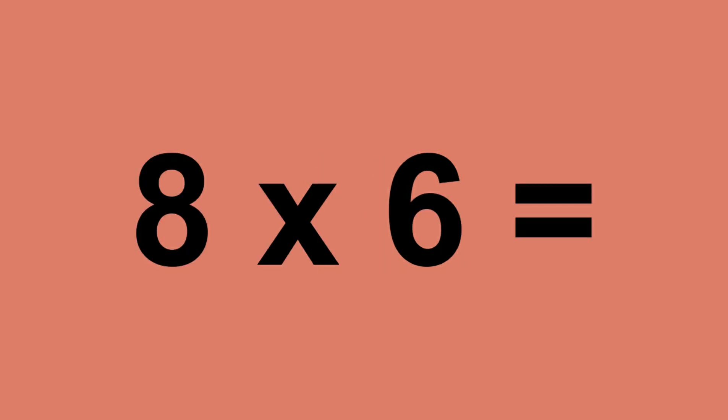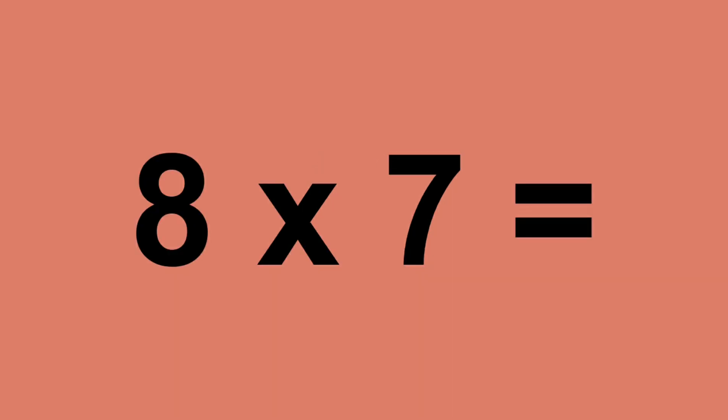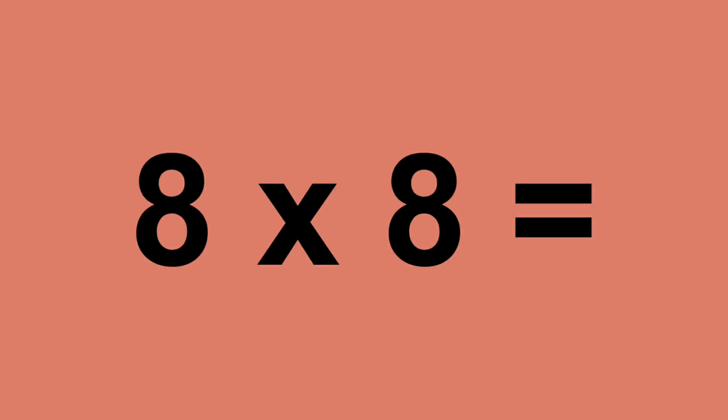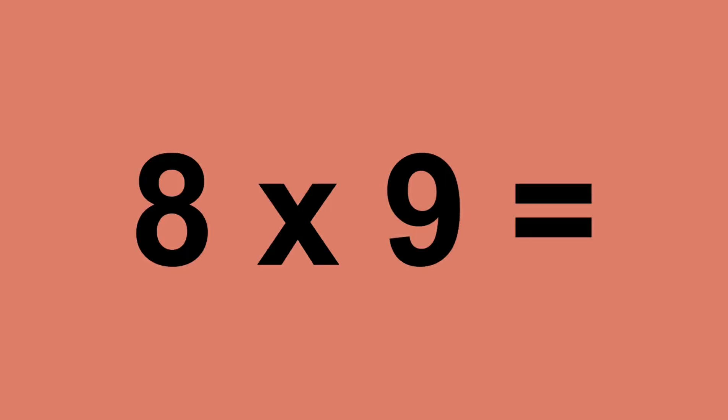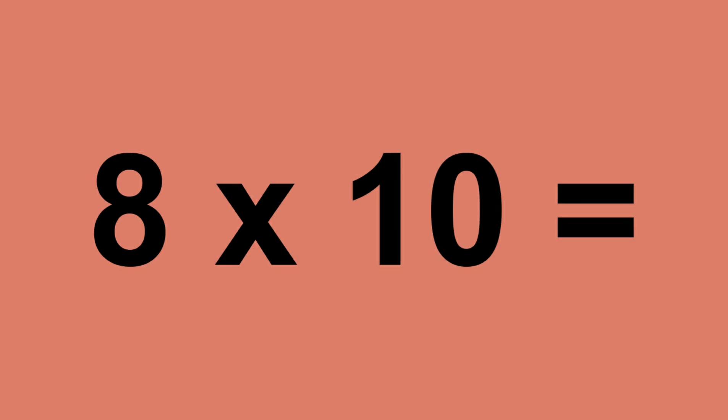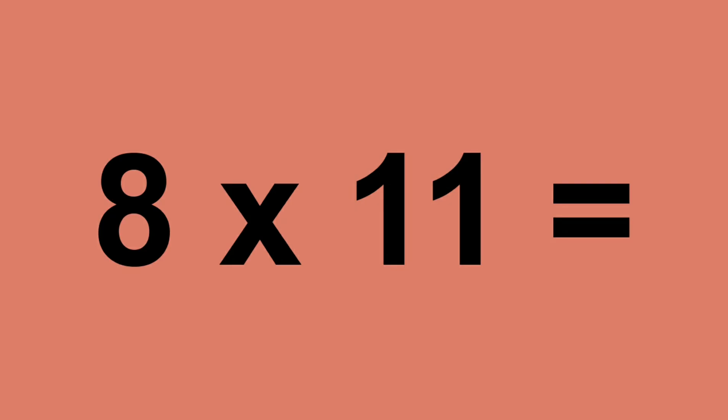Eight times six equals forty-eight. Eight times seven equals fifty-eight. Eight times seven equals fifty-six. Eight times eight equals sixty-four. Eight times nine equals seventy-two. Eight times ten equals eighty-two.